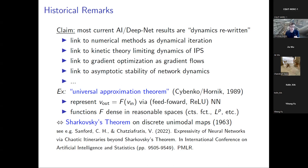That universal approximation result is more or less the same as Sharkovsky's theorem for discrete unimodal maps from 1963. Sharkovsky's theorem gives you this universal interpolating power, and you can reinterpret it as a universal approximation theorem. This is actually true for many theorems on deep nets and AI — if you look at them through the correct lens, they are effectively dynamical systems theorems.